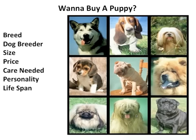Here's a practical example: you want to buy a puppy. What are you going to consider? You might consider the breed, the dog breeder, the size, the price, the amount of care needed, the personality, the lifespan. These are usually termed attributes of a product in conjoint analysis. Some people might decide that price isn't a factor, while for others it could be personality that's really important. This reflects the kinds of tradeoffs that people make.